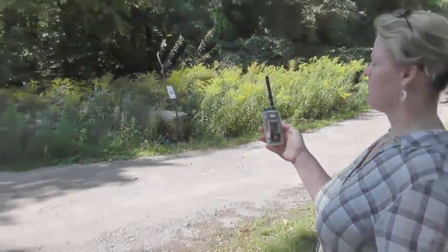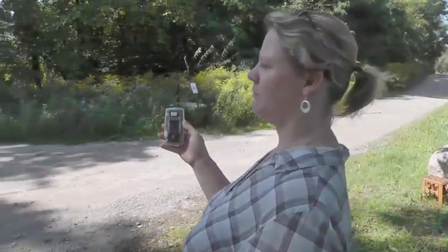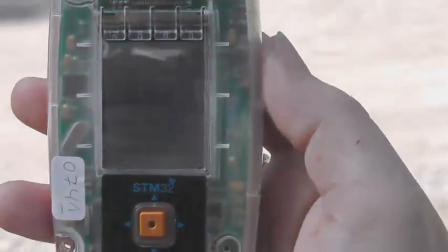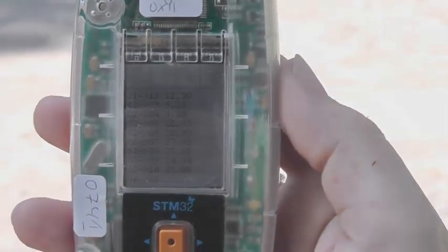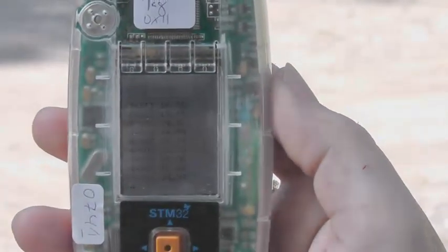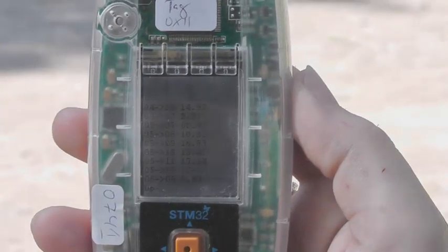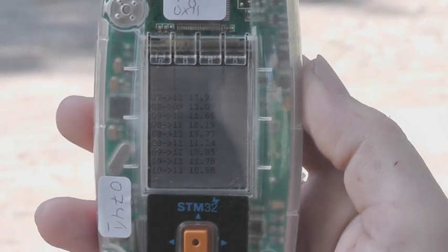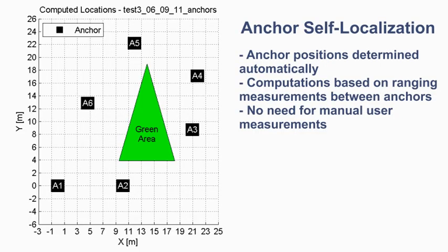Before tag localization can start, the anchor positions need to be determined. In Nanotron's virtual fencing system the anchors are self-localized. This means ranging measurements between anchors are used to compute anchor positions automatically. Related measurements and computations are performed by the tag, which is emulated using an STM32 device equipped with an RF daughter board. By looking at the LCD we can follow the ranging measurement procedure between the anchors. The graph illustrates the computed anchor positions and it suggests the results match the real positions. Anchor self-localization provides an easy and convenient way to determine anchor positions.